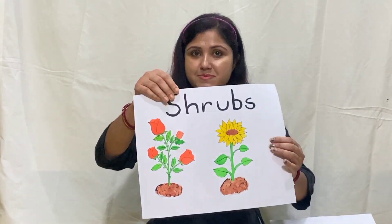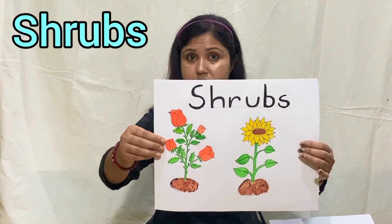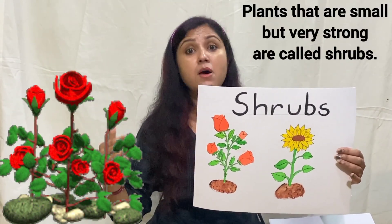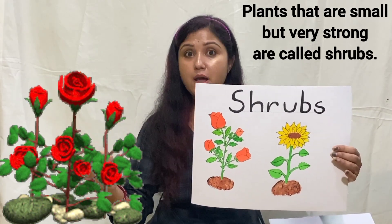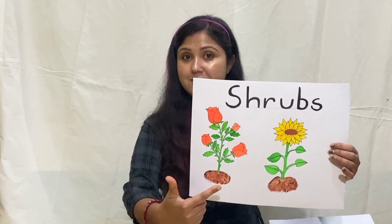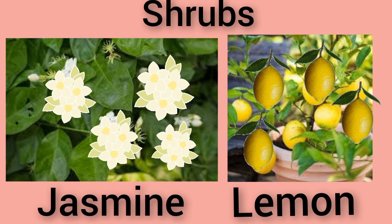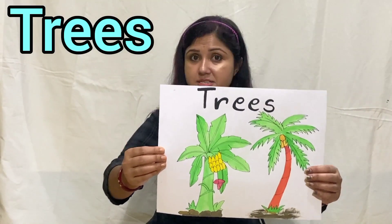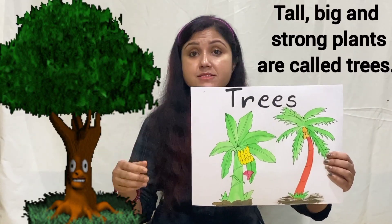The next type is shrubs — S-H-R-U-B-S. Plants that are small but very strong are called shrubs. Examples include rose plant, sunflower, jasmine, and lemon plant.